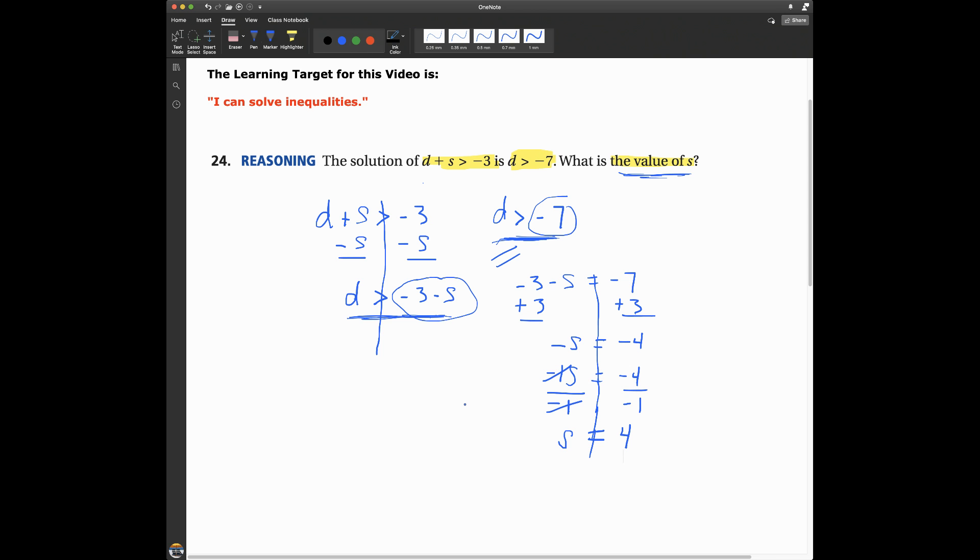So it is S equals 4. And if I substitute S equals 4 back into that inequality, let's see what we get. We'll have D is greater than negative 3 minus 4. So D is greater than negative 7, which we say over here. That was part of the problem. So we have actually found the value of S that works in this problem.